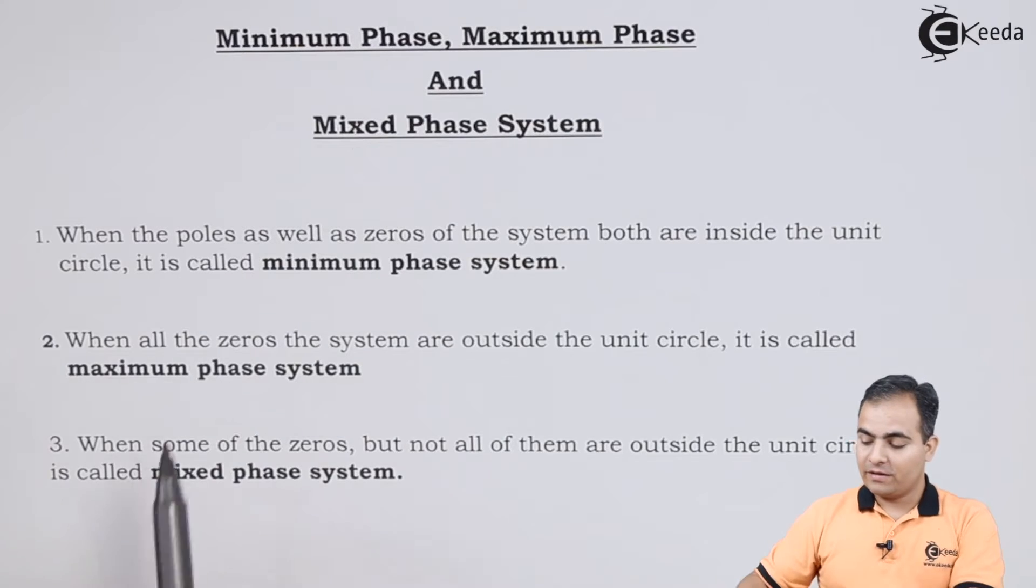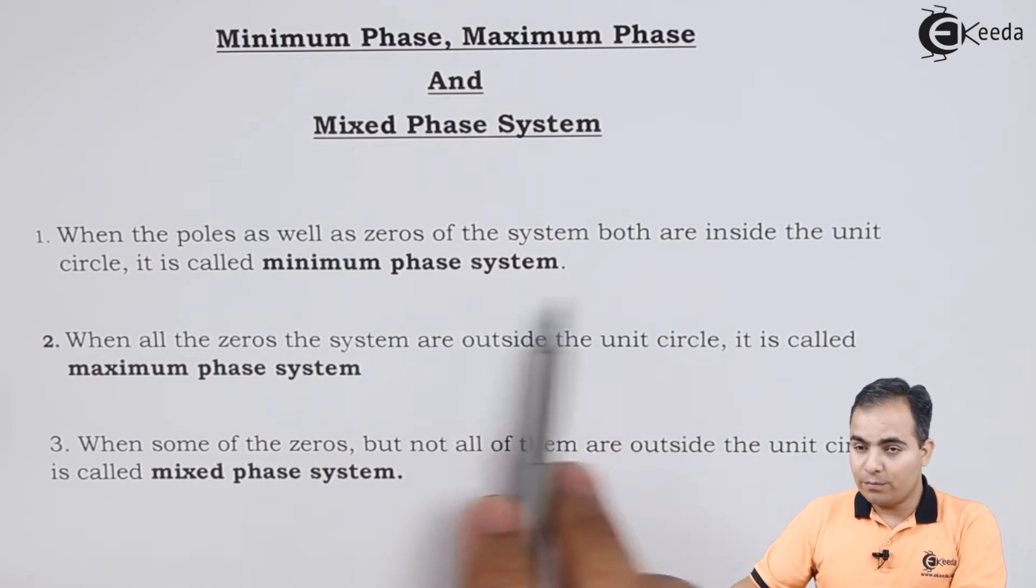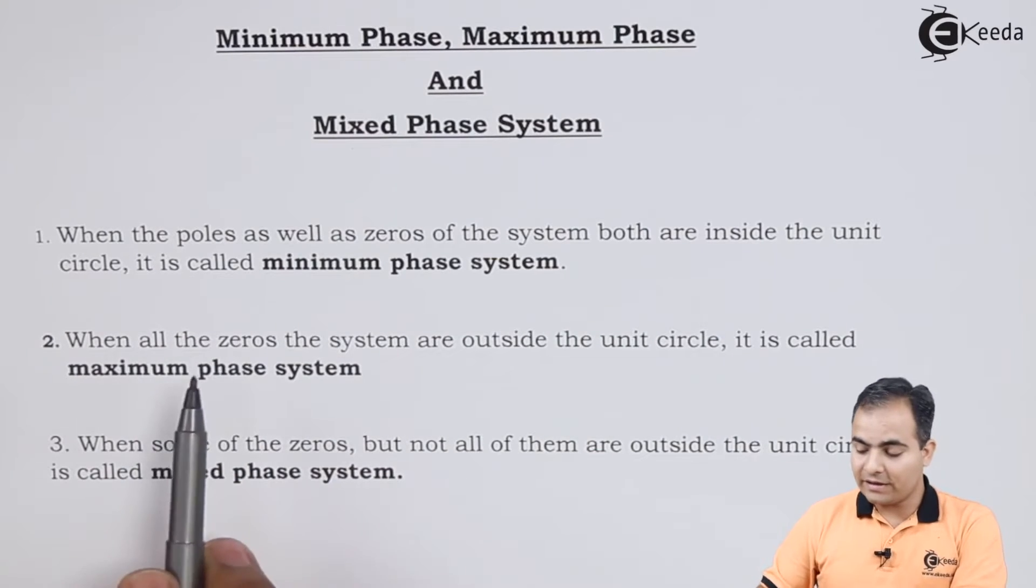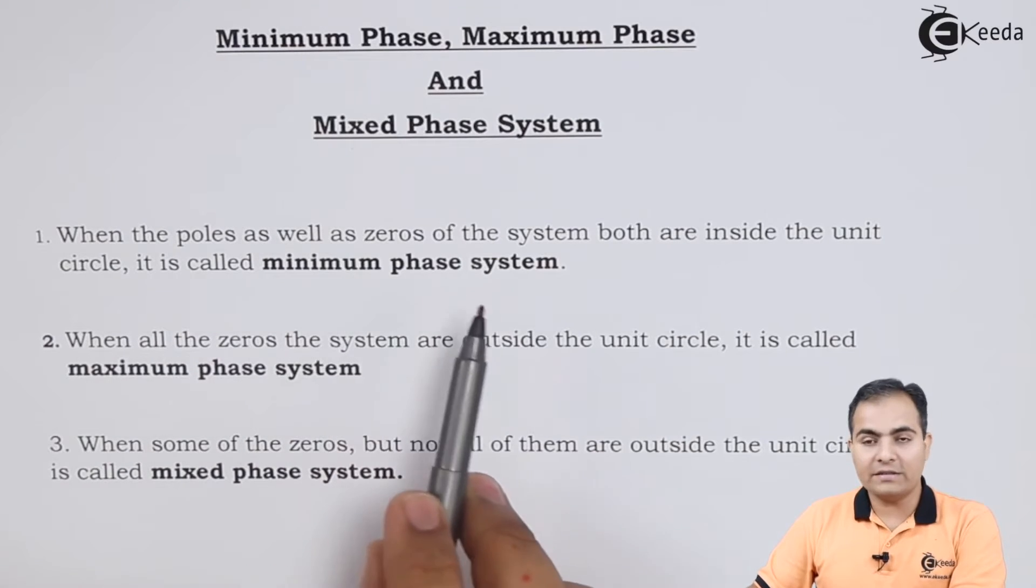First of all, when the poles as well as zeros of the system both are lying inside the unit circle, then the given system is called a minimum phase system.